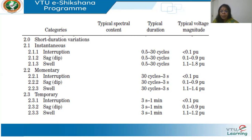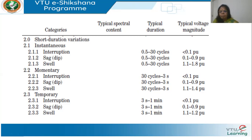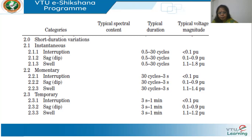Then we have momentary changes — interruption, sag, and swell — where the duration is slightly higher, up to three seconds (from about half a second up to three seconds). Next, temporary interruptions, sags, and swells last up to one minute. All of these together are called short-duration variations — maximum duration is up to one minute.